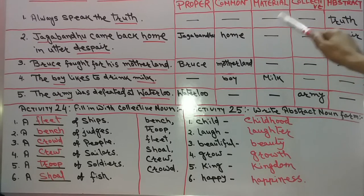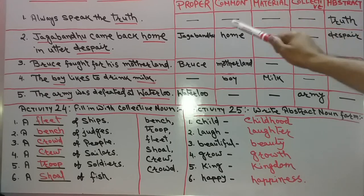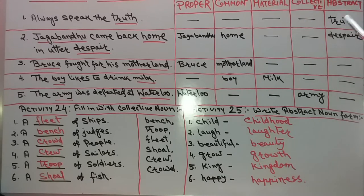The five columns are: proper, common, material, collective, and abstract. There are 5 columns in total.